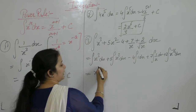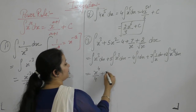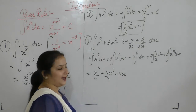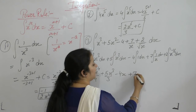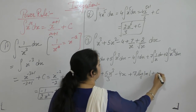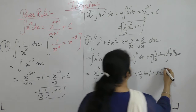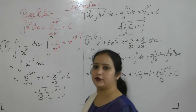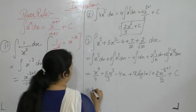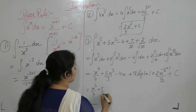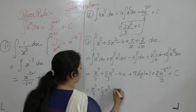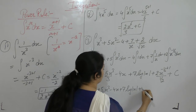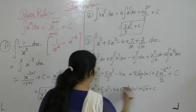Applying the power rule to each term: integral of x³ gives x⁴/4, integral of x² gives x³/3, integral of 1 is x, integral of 1/x is log|x|, and for x^(-1/2): the exponent becomes -1/2 + 1 = 1/2. So the final answer is x⁴/4 + (5/3)x³ - 4x + 7 log|x| + 4√x + C.